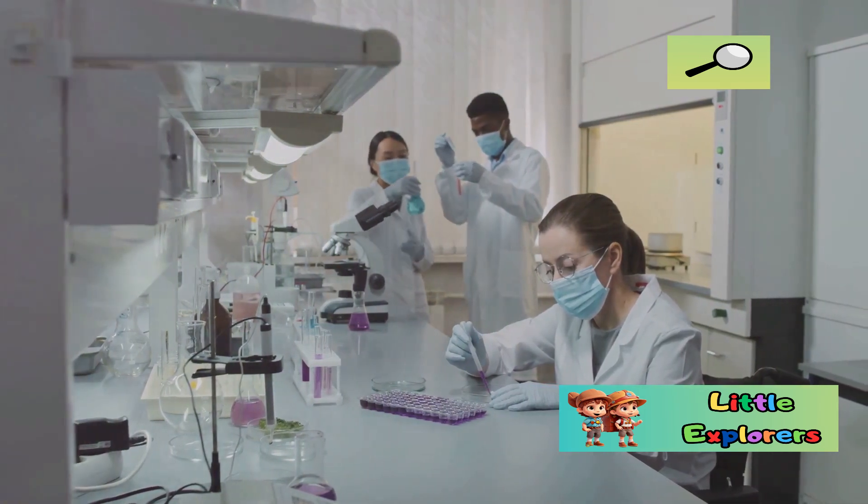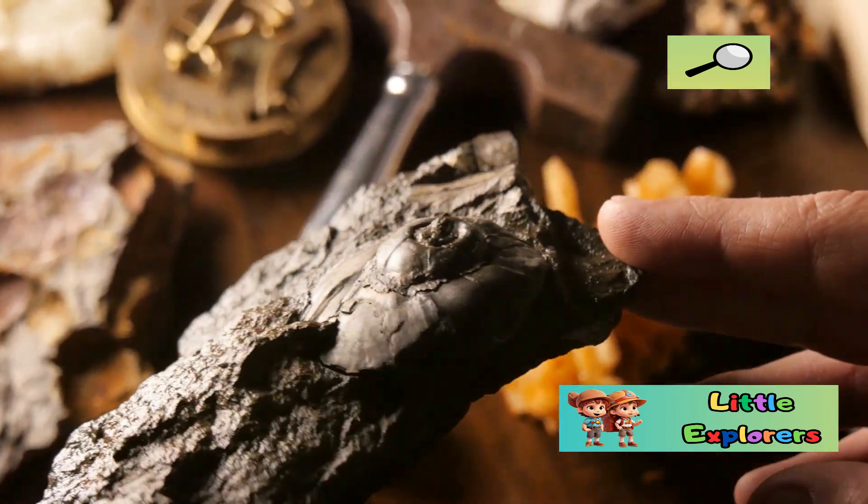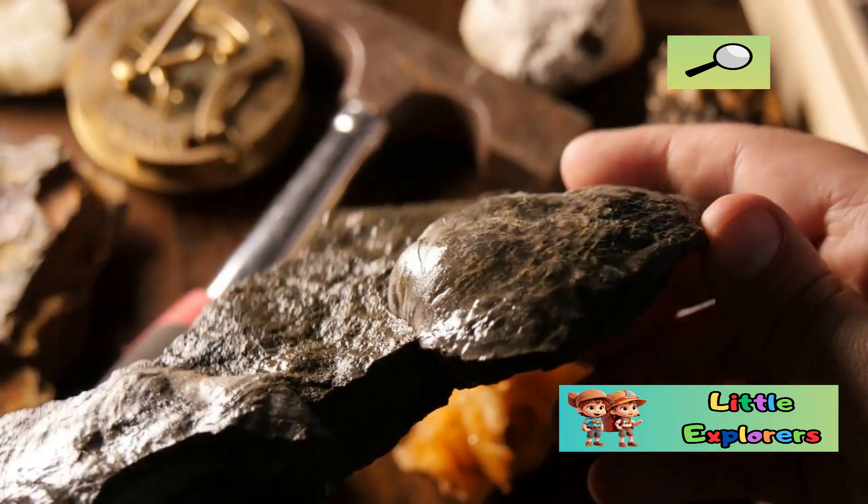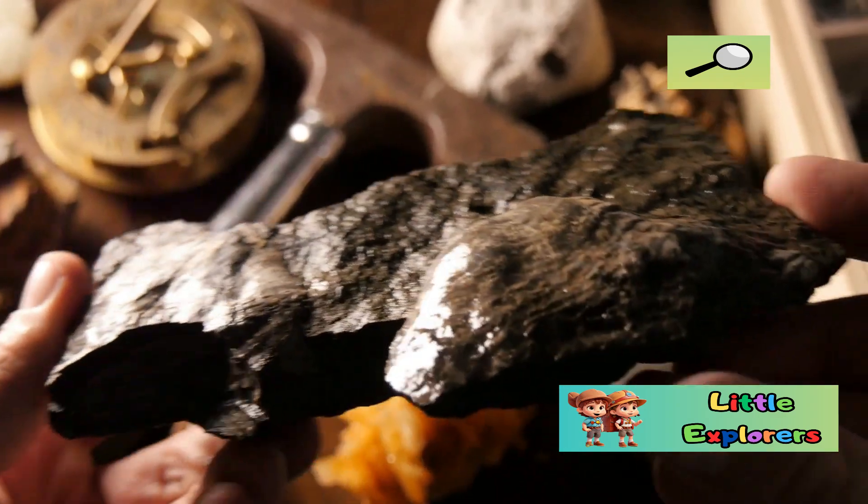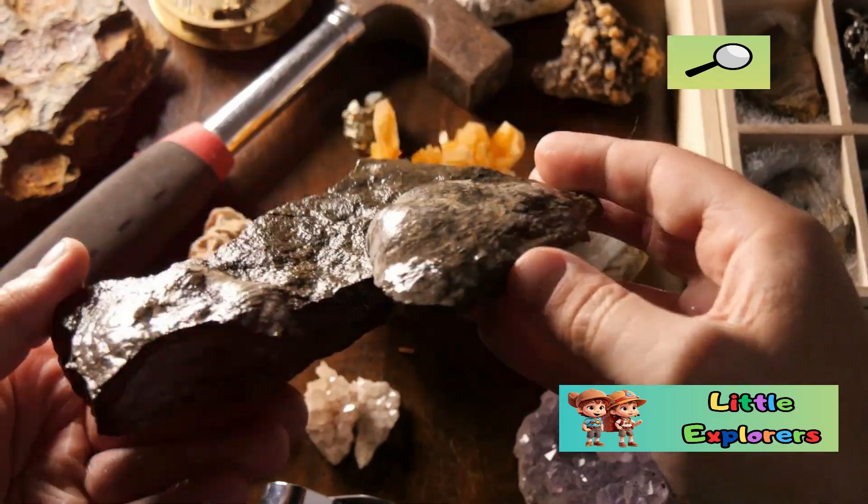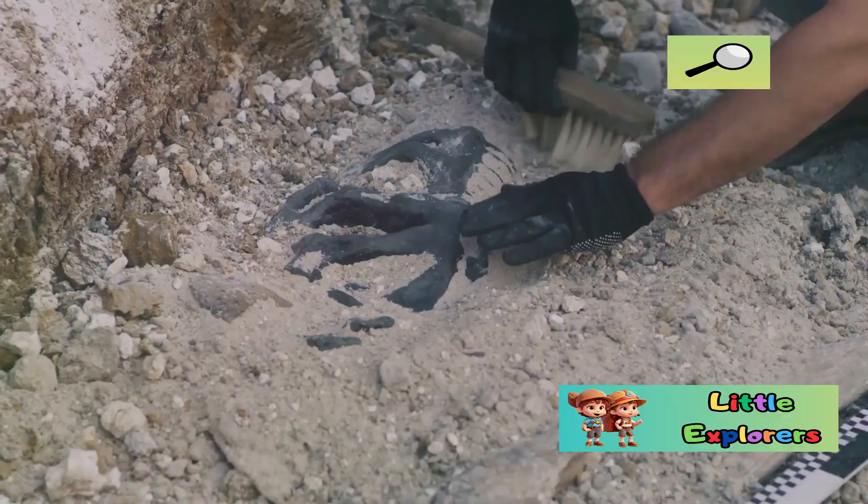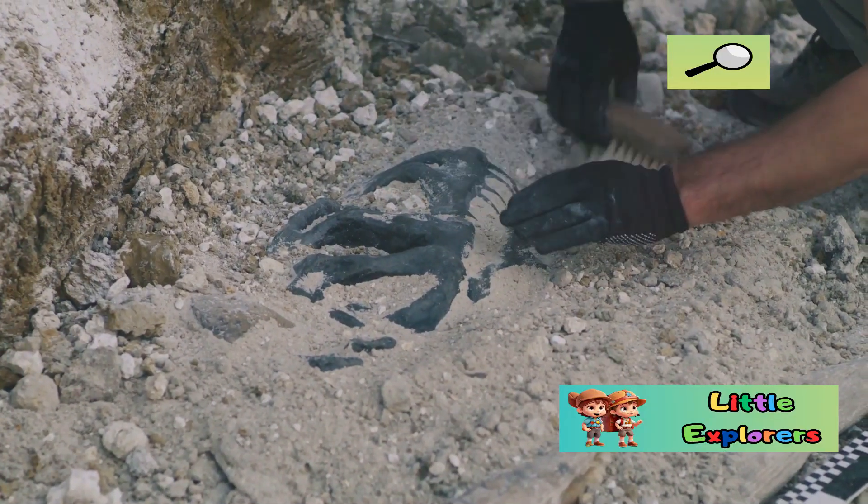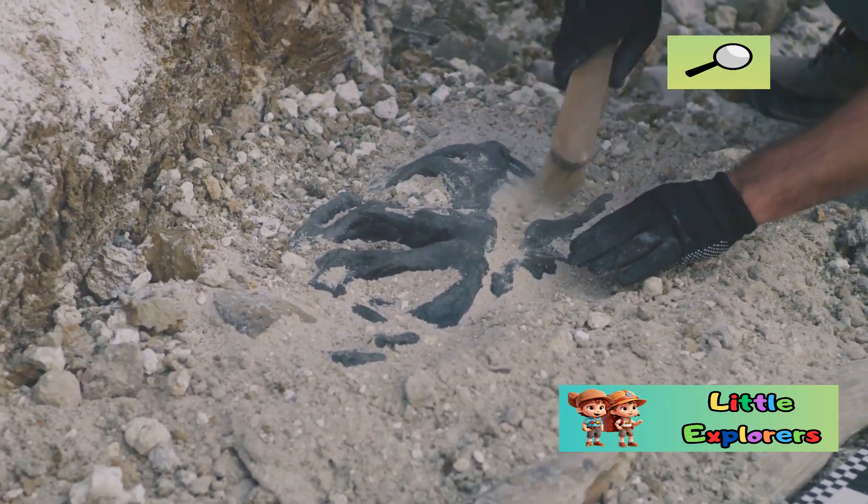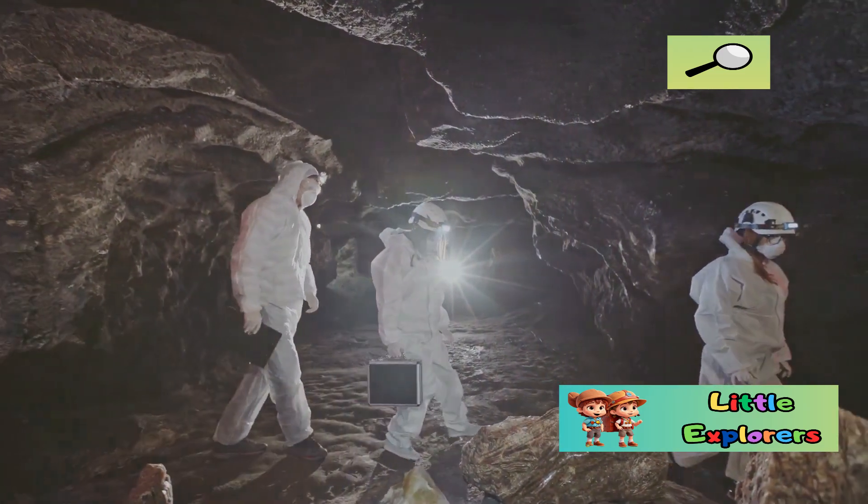One significant finding was the discovery of microscopic fossils in rock samples from the Kola Super Deep Borehole. This borehole, one of the deepest man-made points on Earth, has provided a unique window into the subsurface world. These fossils, found at depths of over six kilometers, provided evidence of life existing much deeper than previously thought possible. The discovery challenged our understanding of the limits of life on Earth and suggested that life could exist in extreme conditions far below the surface. It opened up a new realm of possibilities for the existence of a deep biosphere.